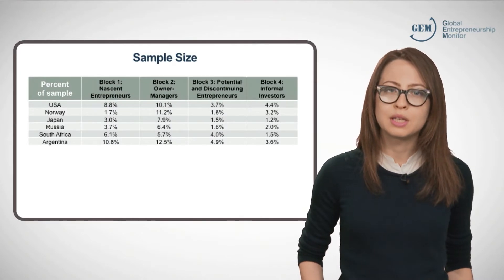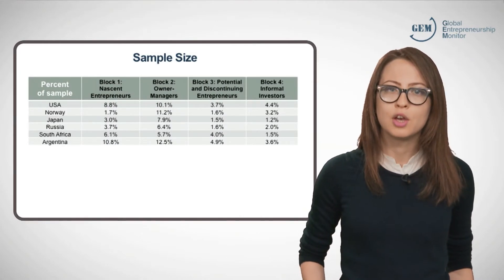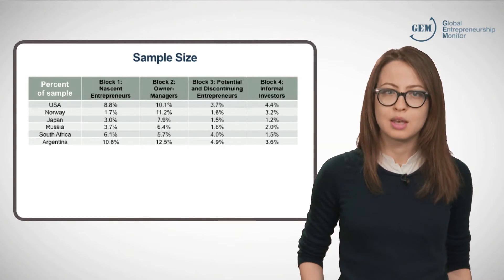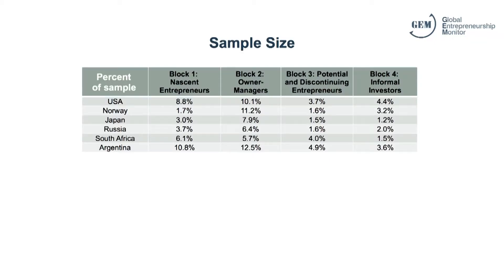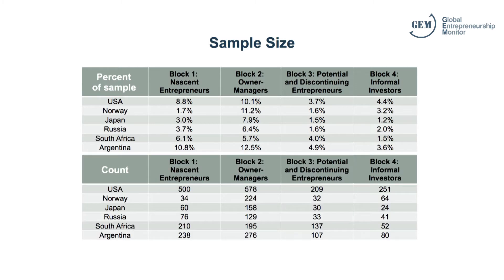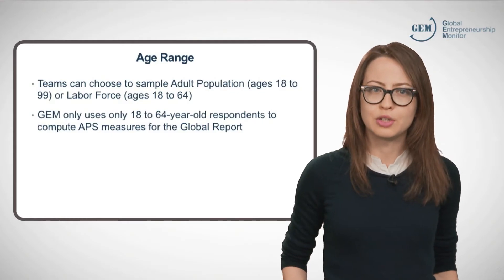Here is an example of the percent of respondents which qualified for four APS blocks in six differently sized samples. You can see that the blocks often capture a small proportion of the respondents, and may represent very few actual cases. So if you only have 34 nascent entrepreneurs in Norway, for example, you must be cautious of your ability to apply detailed analysis to this subgroup.